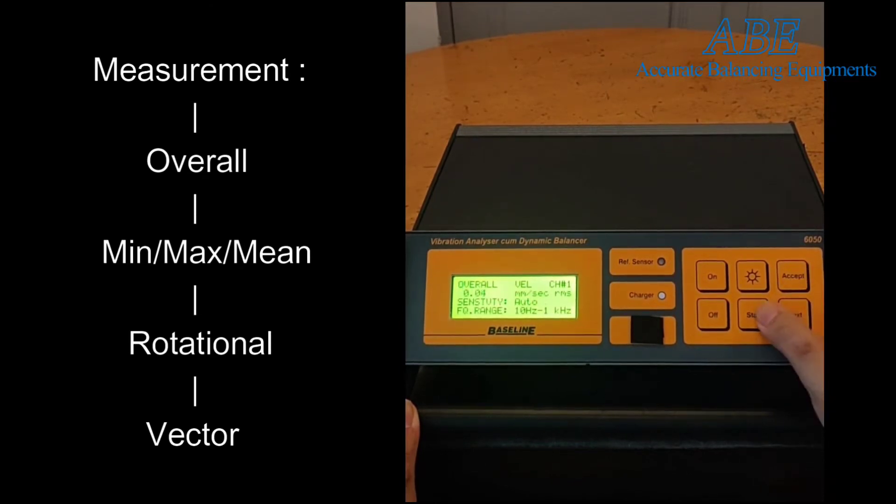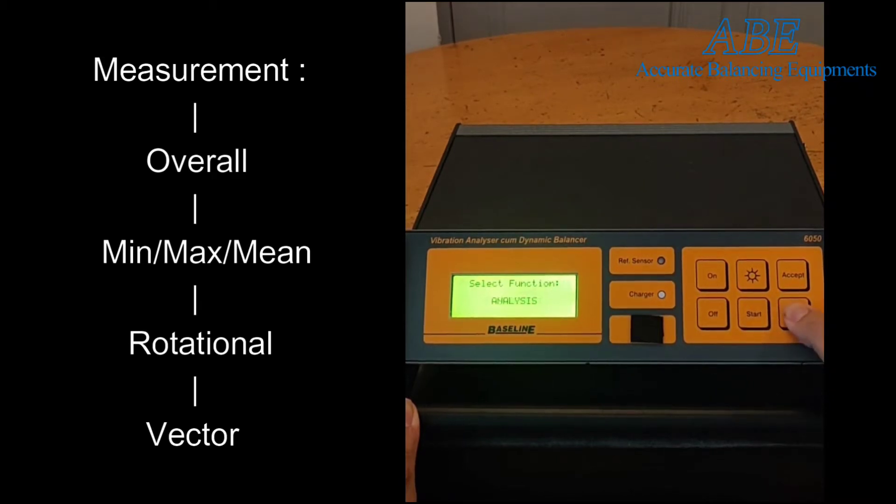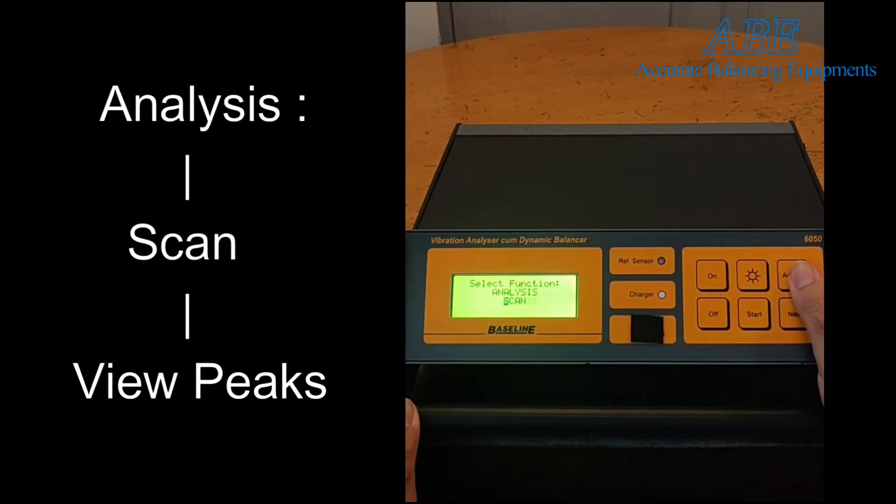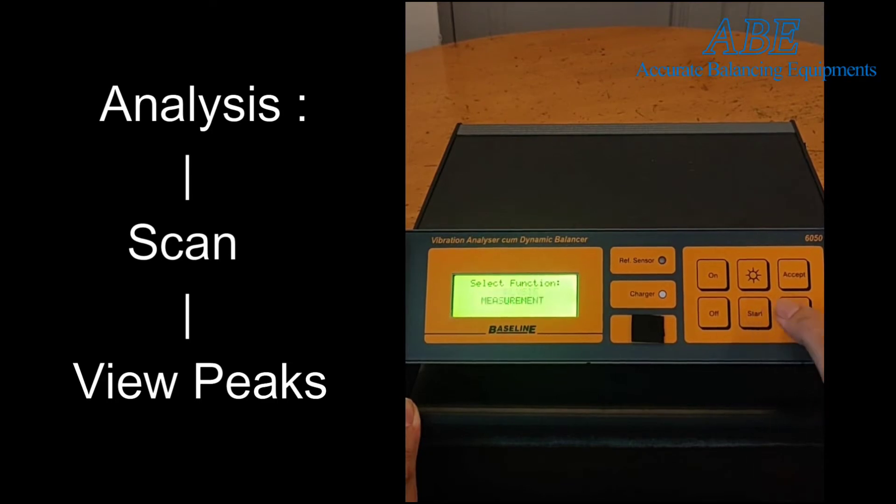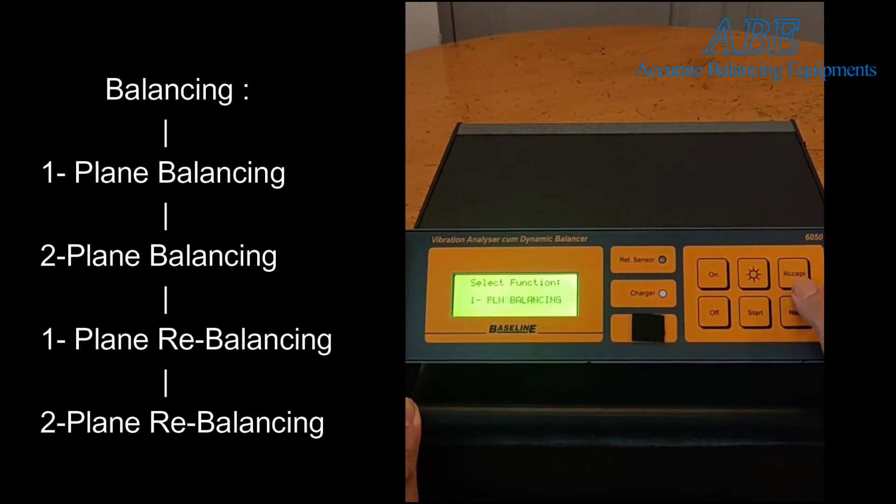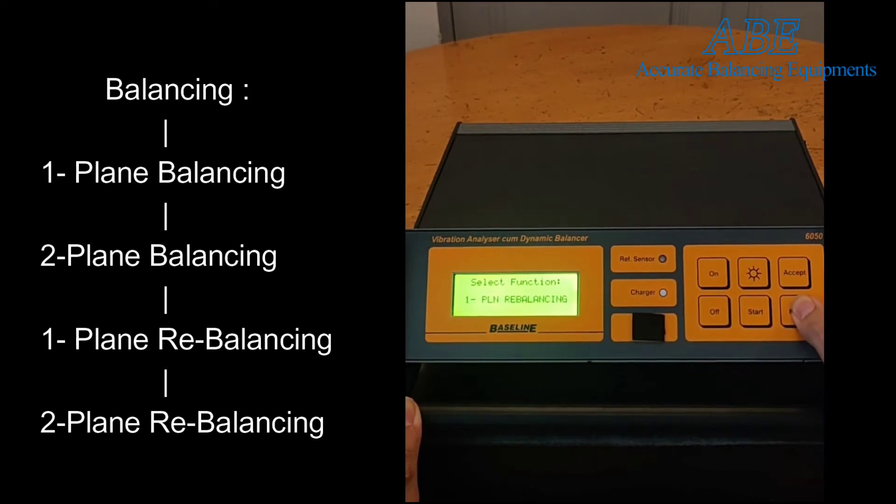Next is vector, useful for assessment of relative phase. Inside analysis, you get the option to scan the spectra and view the major peaks of the saved spectra. Inside balancing, you get the option of single-plane balancing and two-plane balancing. You also have the option of single and double plane rebalancing.